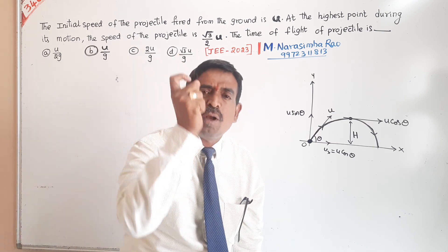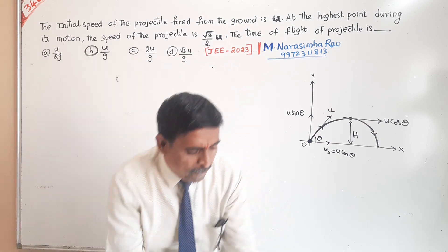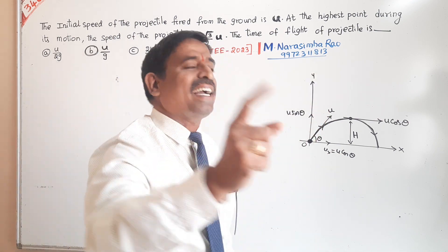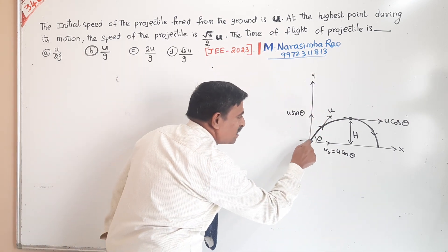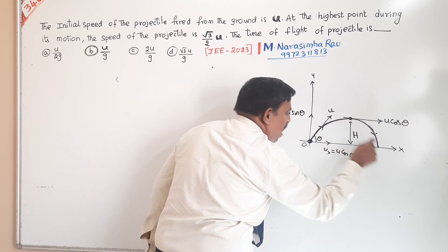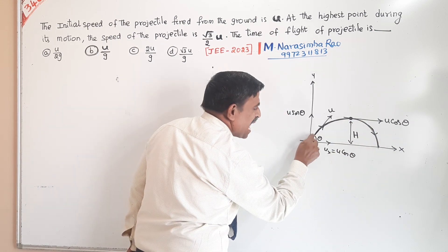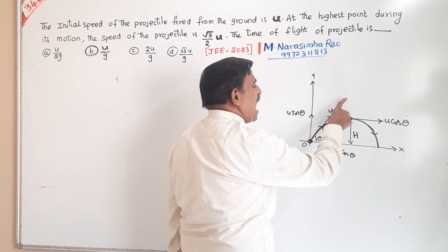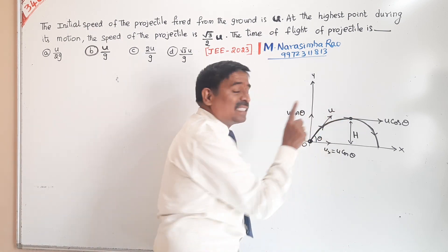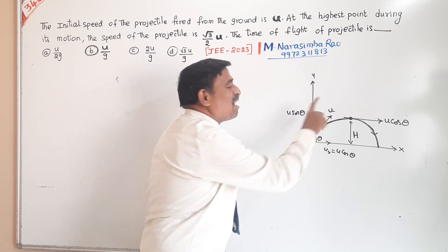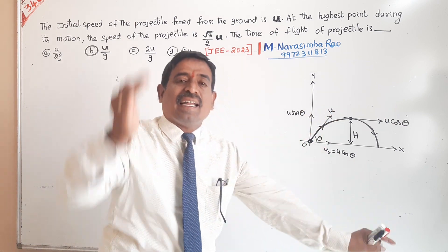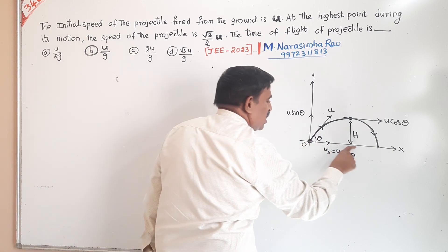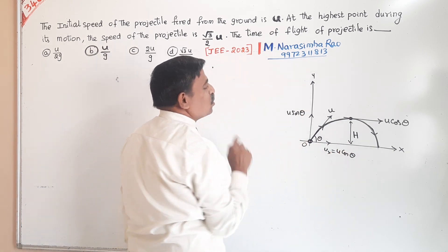The best example for projectile motion is a ball hit by a batsman. When you hit the cricket ball, it travels along a parabolic path. Theta is the angle of projection. The ball moves into the air with some initial velocity U, which we separate into two perpendicular components: U cos theta and U sin theta.